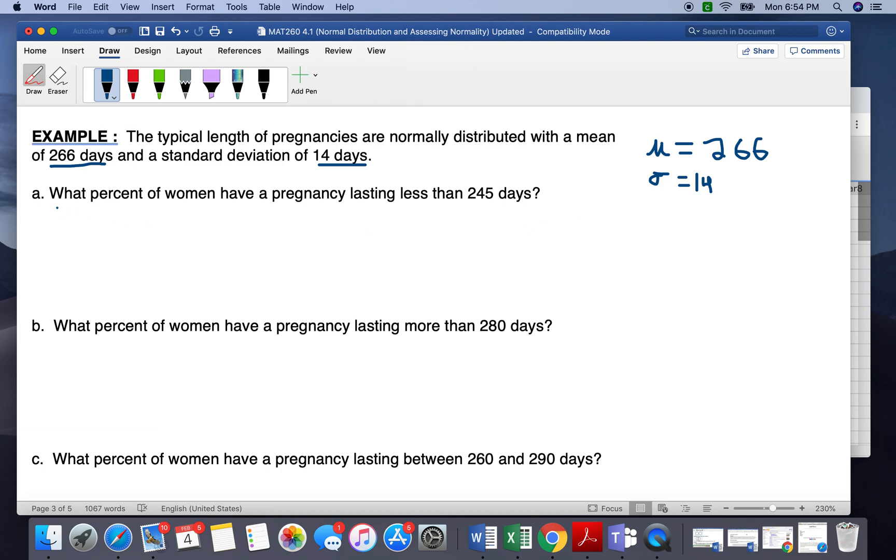So our first part here, we want to know what percent of women have a pregnancy lasting less than 245 days. So you always want to draw out your curve. So we're going to draw out with our mean in the center, so 266.